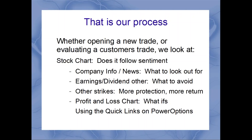There might be something in the news causing the downturn. Earnings or dividends coming up might be another reason to avoid it. Always look at the profit and loss chart — you'd be surprised. A customer will call in saying they're considering opening a ratio backspread position without having looked at the profit and loss chart yet, and it doesn't even match what they're trying to do. They just read that it could outperform a bear call spread or offer more security. But once I get them to look at the chart, they say, oh yeah, that's not really what I want. So always look at it first. Using the quick links on Power Options, you can access all that information right away.